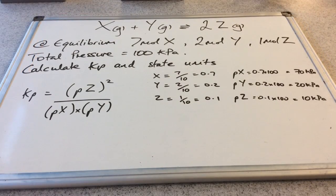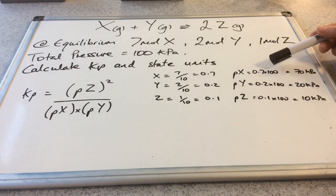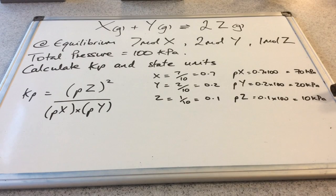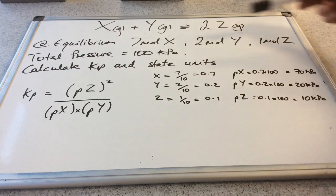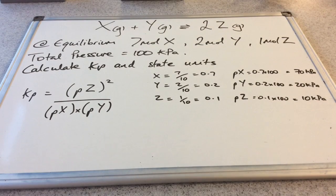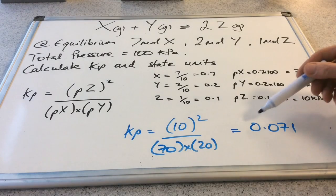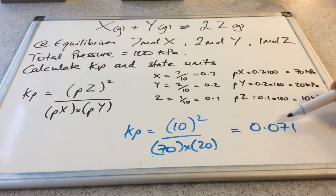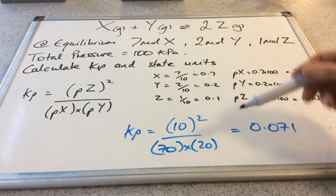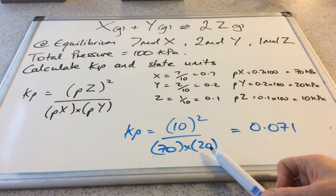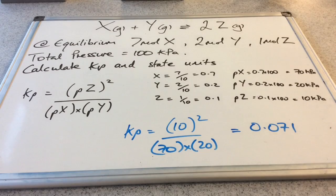Now we know the mole fractions, we can calculate the partial pressures of the three components by multiplying the mole fraction by the total pressure of 100 kilopascals. We get 70, 20, and 10 kilopascals. Another quick check: your partial pressures have to add up to the total pressure, and they do. Substituting those numbers into the Kp expression, we get a numerical value of 0.071. For the units, we've got kilopascals squared on the top and kilopascals squared on the bottom, so this Kp has no units.